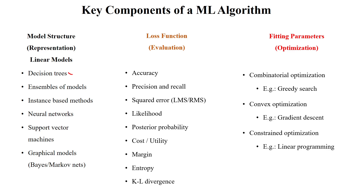Suppose if we want to use decision trees, then our hypothesis function is represented using different tree children. We will use the loss function and different metrics to evaluate our learning system. There are different ensemble methods like boosting and bagging — bagging includes random forest, and boosting methods include AdaBoost and XGBoost.